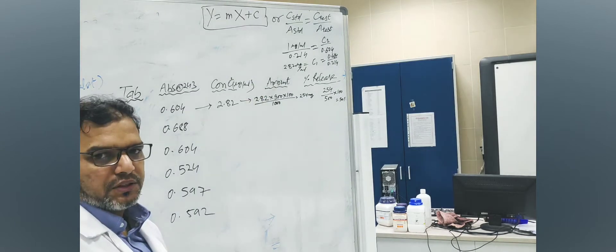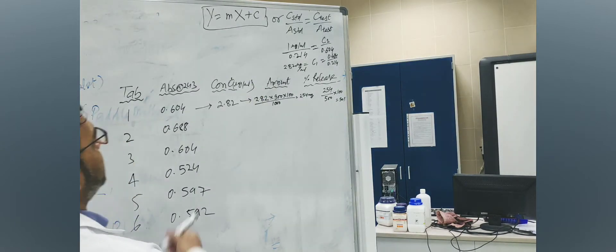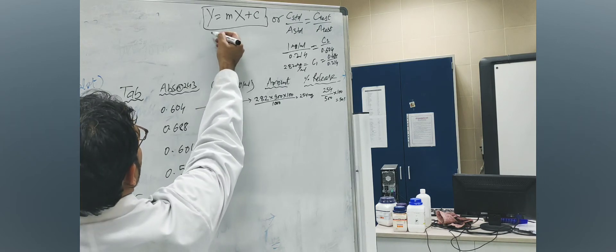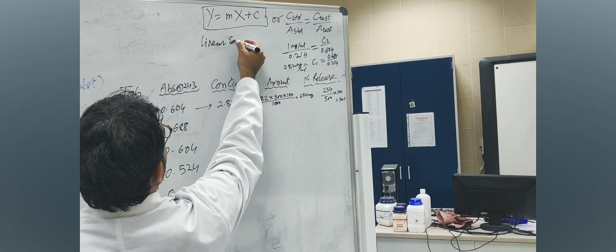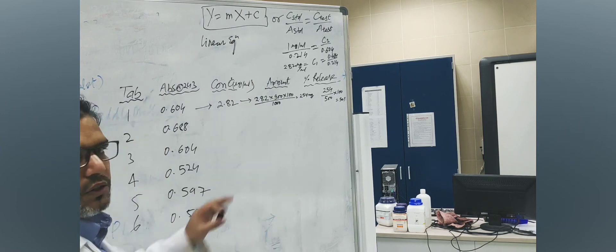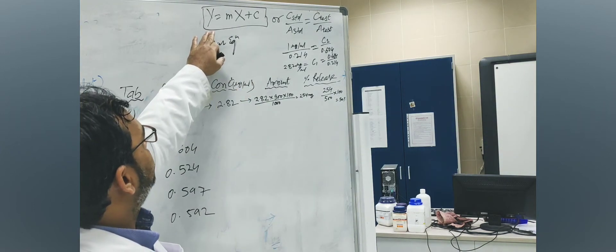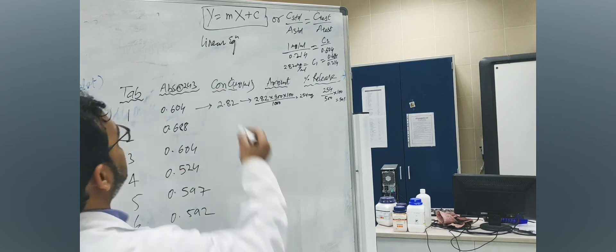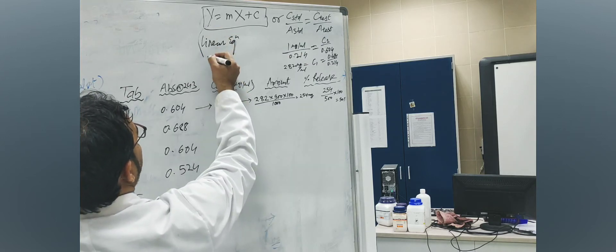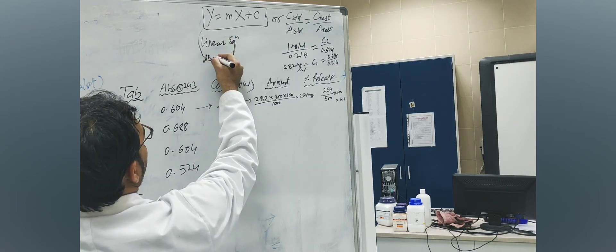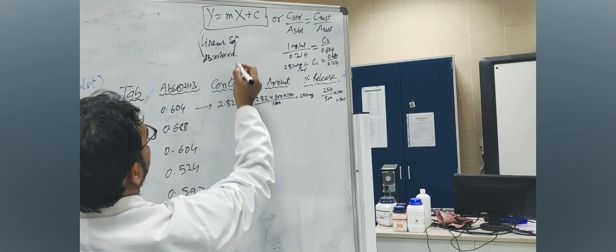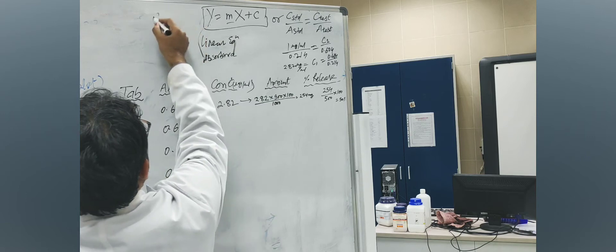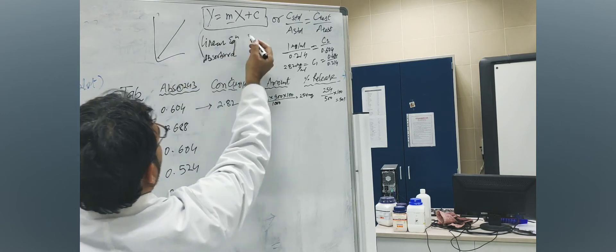And actually if you make a calibration curve, the main purpose is to create this linear equation. Once you have the linear equation, you are going to put your absorbance. This Y is the absorbance of your unknown sample. M is slope of this linear curve.